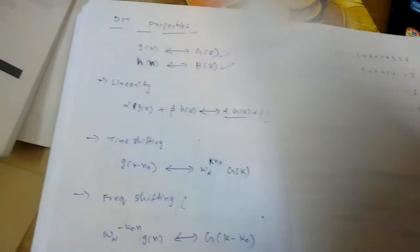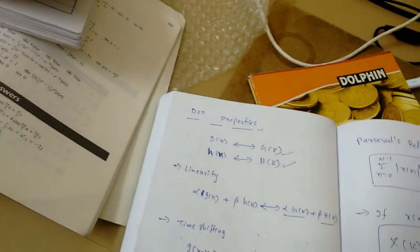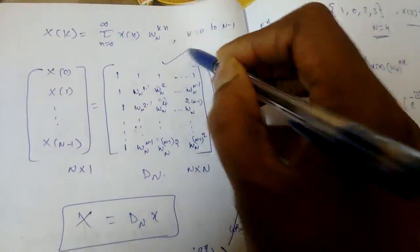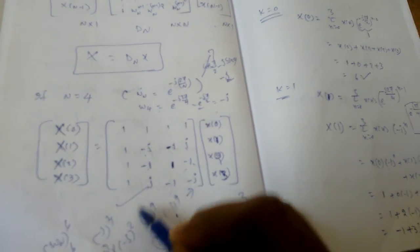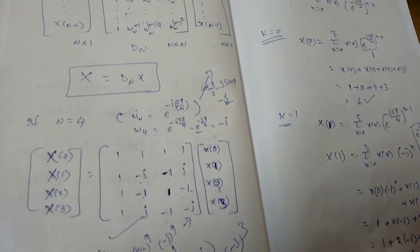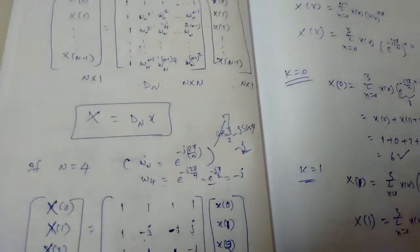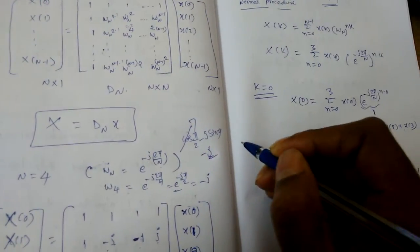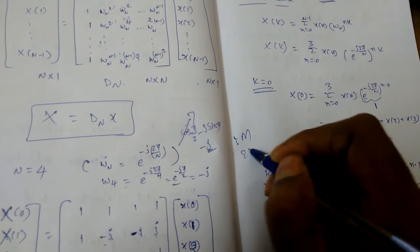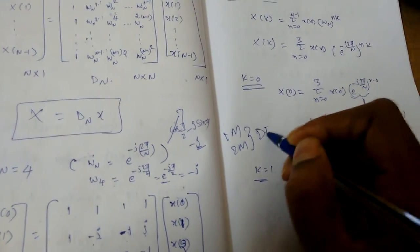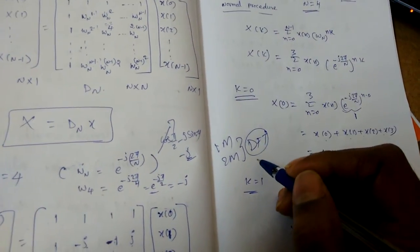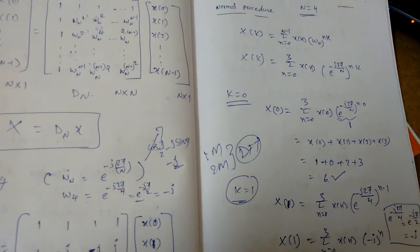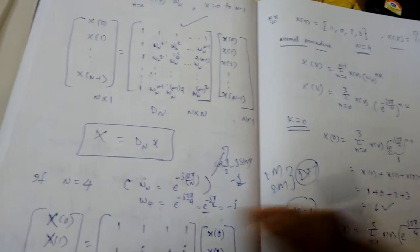That is the circular convolution result. Remember these DFT properties as well as this matrix form — especially for N=4. You will definitely get one or two mark questions from DFT in any GATE or SET exam.